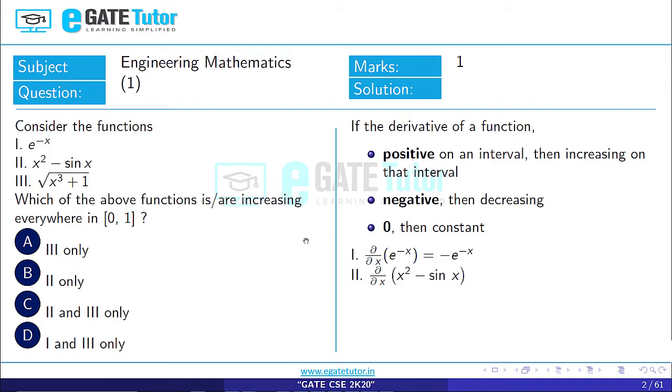Now checking the second function: d/dx(x² - sin x) = 2x - cos(x). If we put x = 0, we get 0 - cos(0) = -1, which is negative. Hence, this function is not increasing.